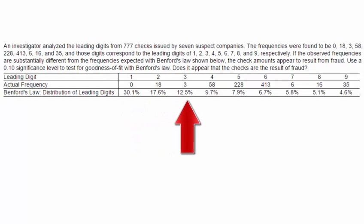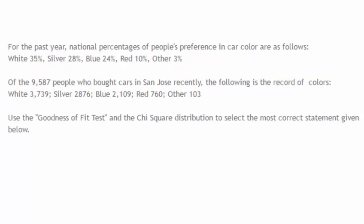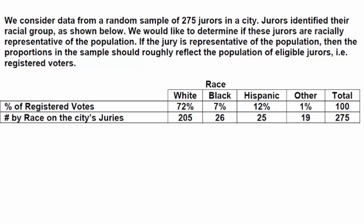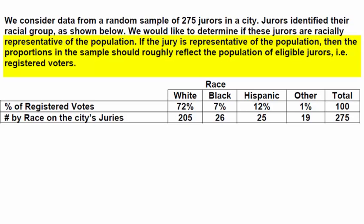Other goodness of fit questions ask if observed frequencies differ from a distribution given by percentages. For example, one question asks whether the leading digits in a sample follow Benford's law, whose distribution is given by frequencies in a table. Another problem compares observed preferences in car color to past preferences given by percentages. A particularly interesting application asks whether there seems to be racial prejudice in selecting jury members — comparing 275 jurors' racial composition to the percentages of registered voters in the city.